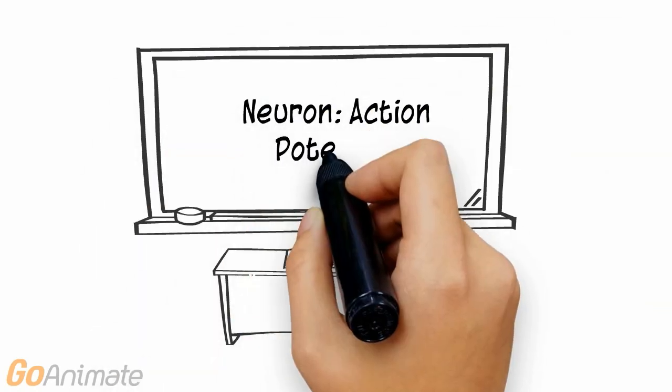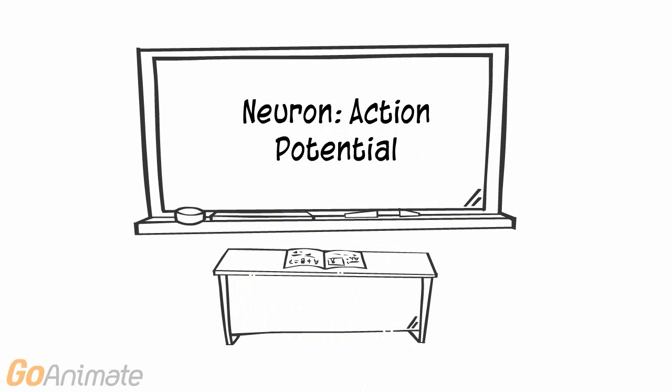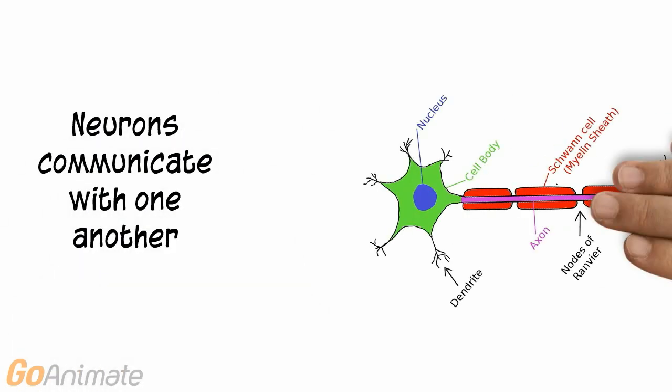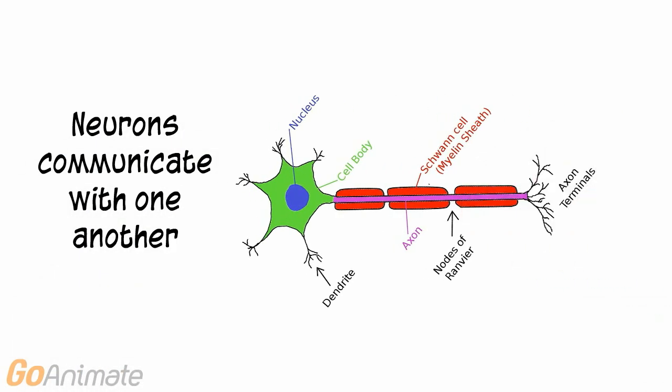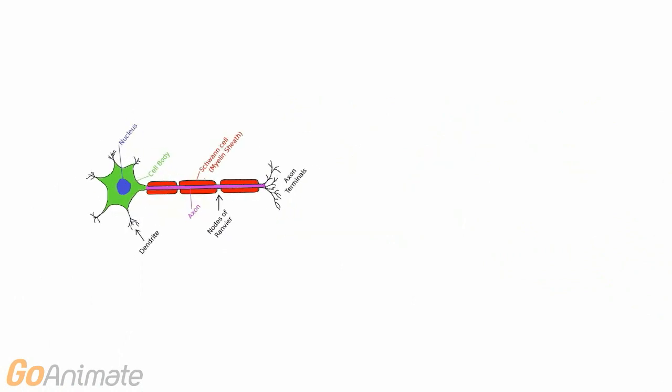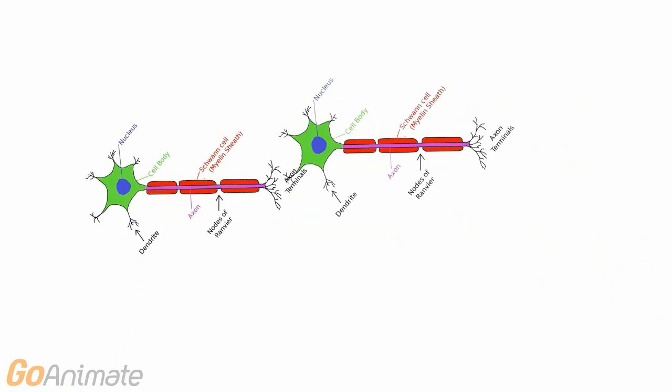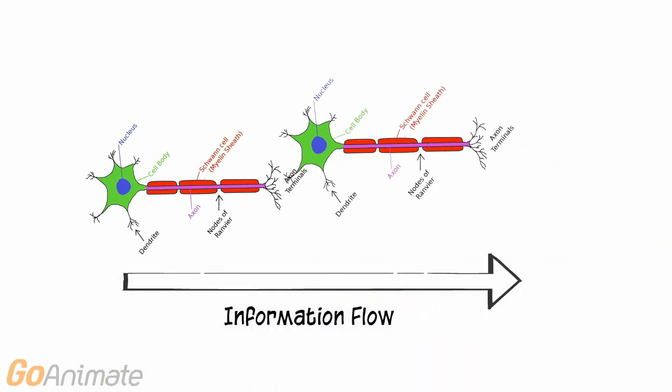Let's learn about action potentials. Nervous system cells called neurons can communicate with one another. One neuron communicates with another by sending a message called a synapse.